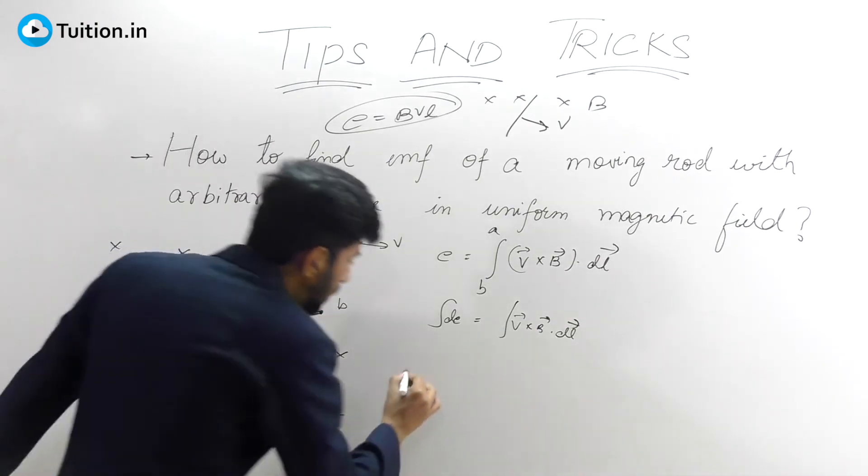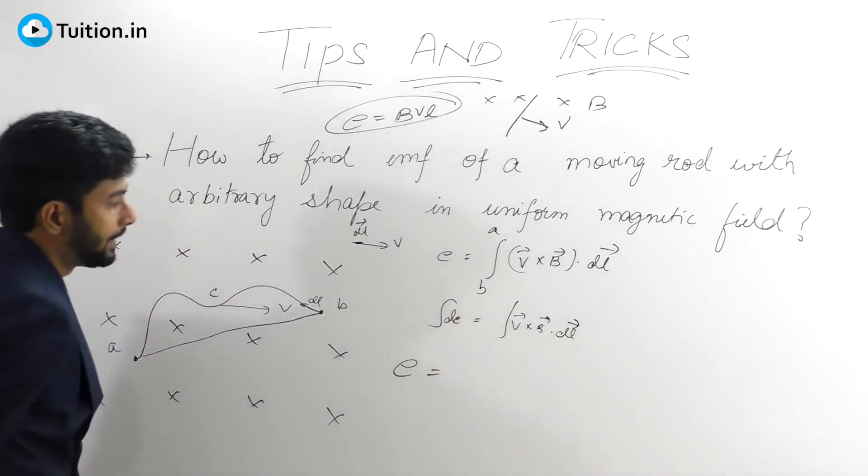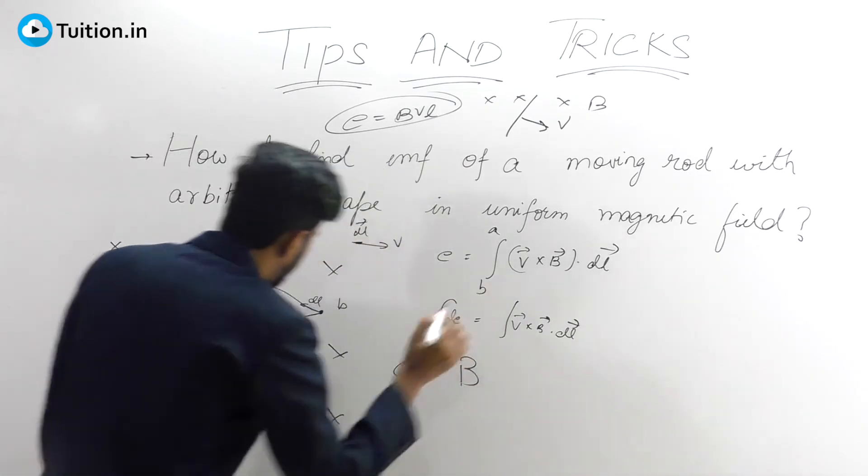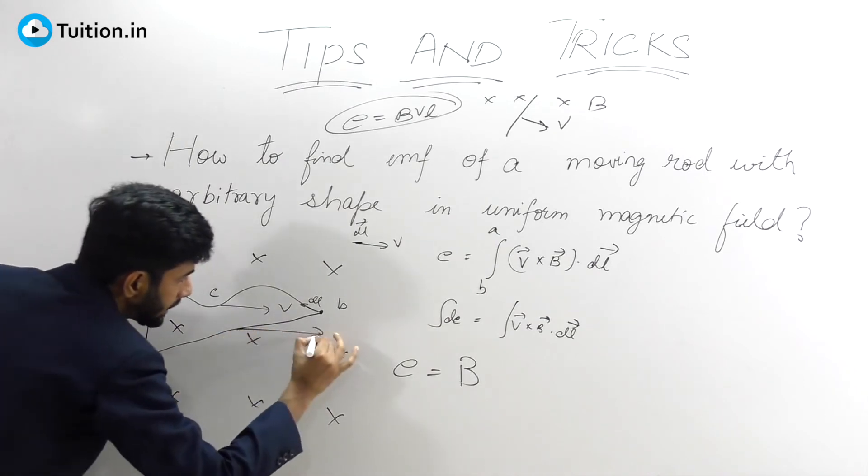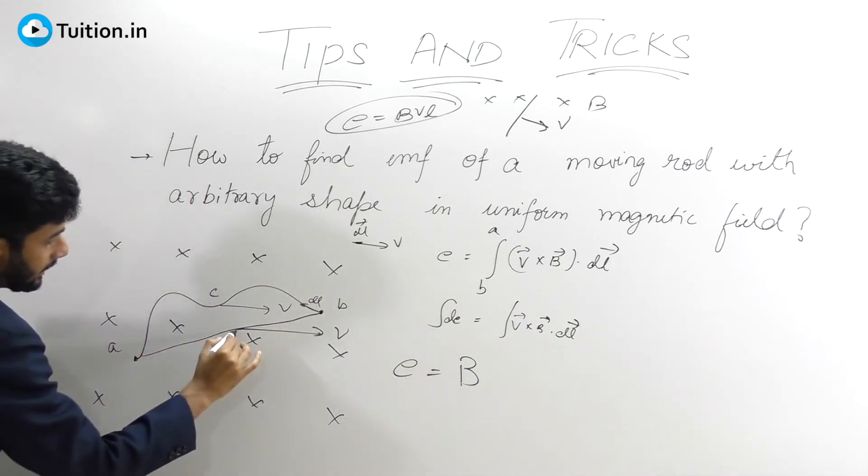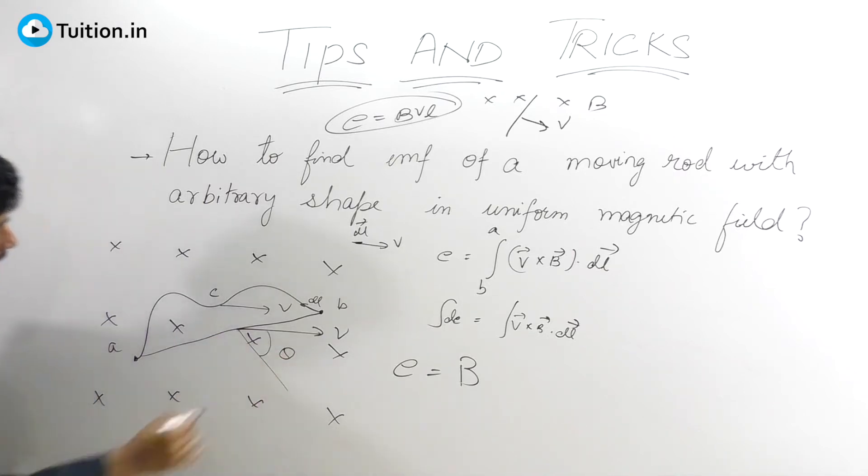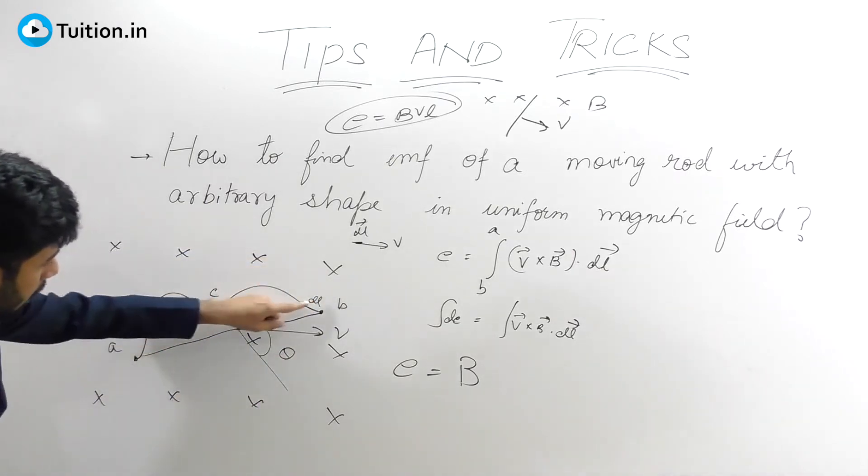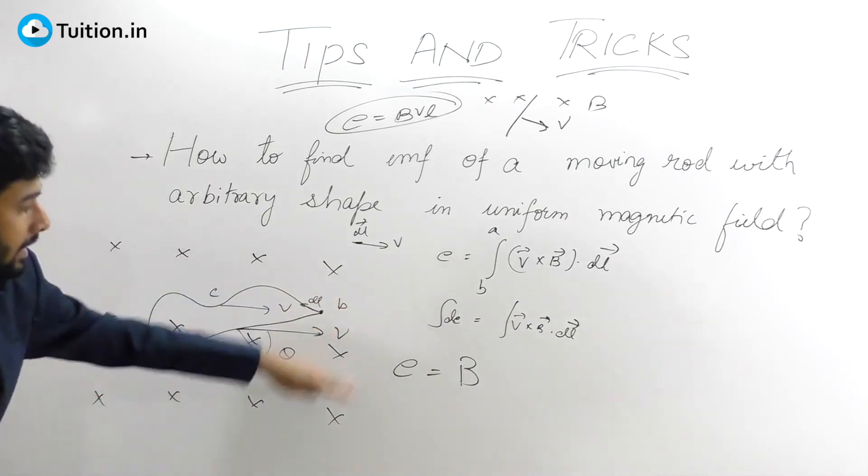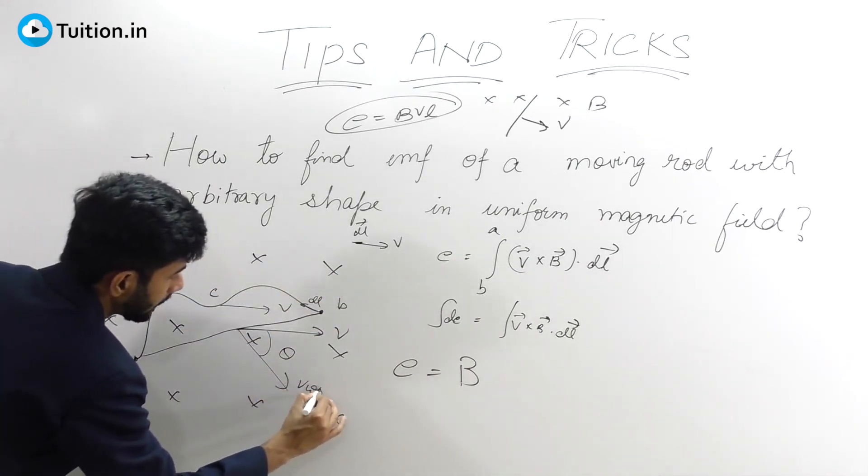So the formula for EMF will be B times—look at this rod now moving with velocity v. Let's say the angle here is theta, the angle between the perpendicular to the rod and v. So this will be v cos theta.